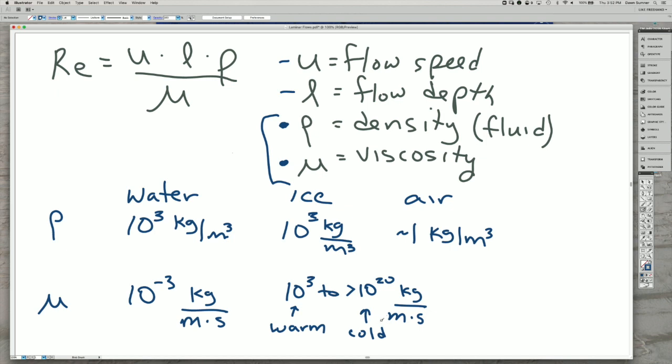And it's more viscous when it's cold. So ice and glaciers that are warm flow much faster than glaciers that are cold. And then the viscosity of air is very low.